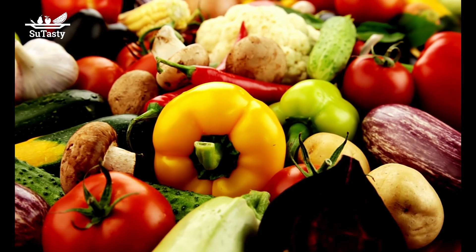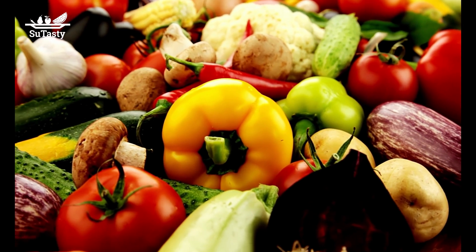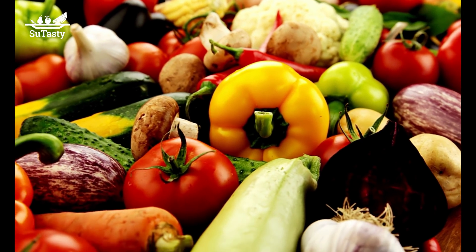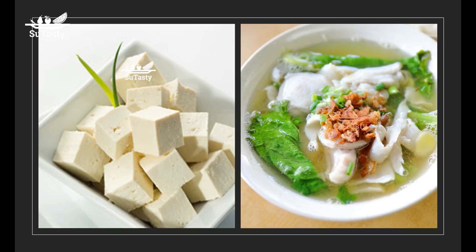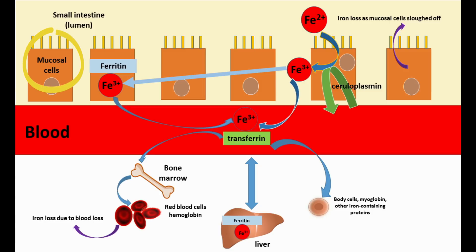However, non-heme iron cannot affect heme iron absorption. Heme iron is absorbed more readily than non-heme iron. Depending on the amount of iron the body has stored, 15% to 35% of heme iron from food gets absorbed. Even though foods with non-heme iron often contain more iron, only 2% to 20% of non-heme iron gets absorbed. The bioavailability of iron in a mixed diet of animal and plant-based foods is about 18%.